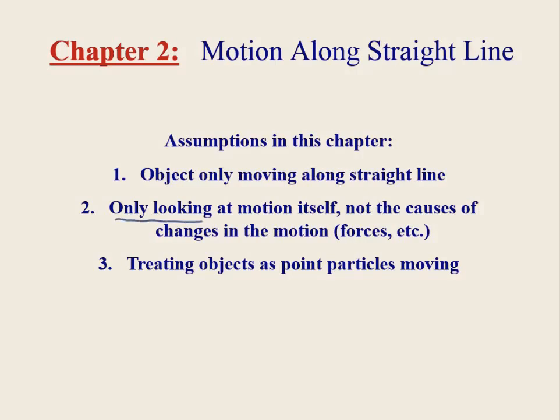We're going to be looking only at the motion itself — specifically something called kinematics. Kinematics is a description of how the object is moving. In kinematics, we'll be looking at things like the location of the object, how fast it's moving, or whether it's speeding up or slowing down. In later chapters, we'll be focusing on the causes of changes in motion — why the object moves the way that it does — and this is referred to as dynamics.